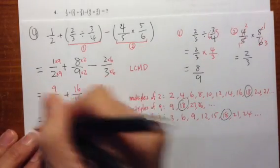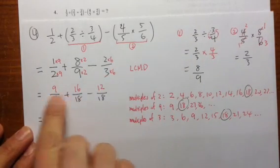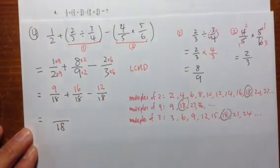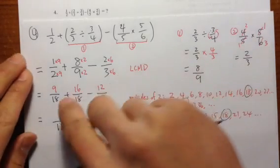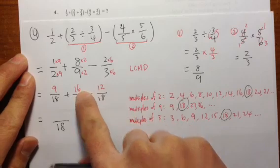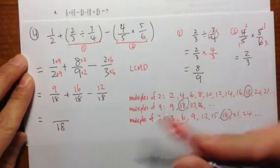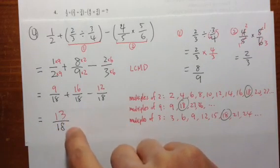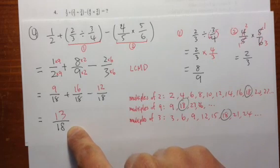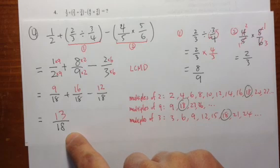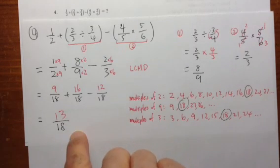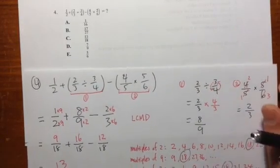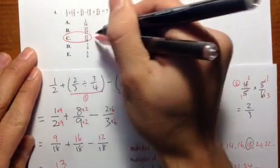Now, to add or subtract, we work from left to right. The denominator stays as 18. Let's keep track: 9 plus 16 is 25, and 25 minus 12 is 13. So we have 13 over 18. Can we reduce that? Can we find a number that goes into both 13 and 18 evenly? The answer is no. So 13 over 18 is the answer to this equation. Looking at the answer choices, that is answer choice C.